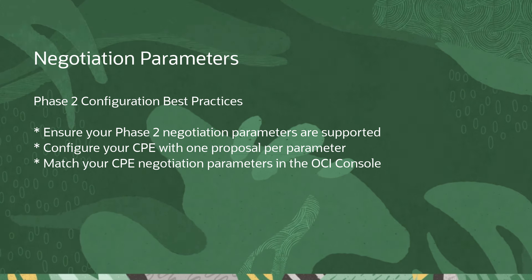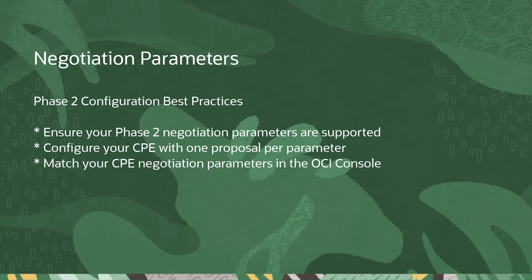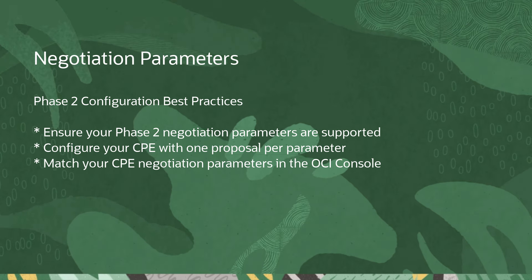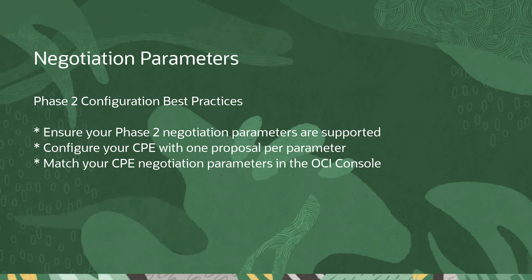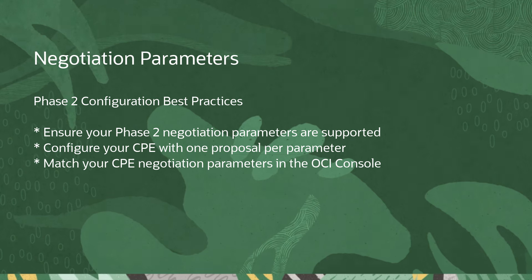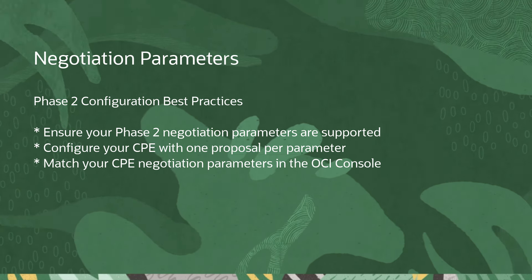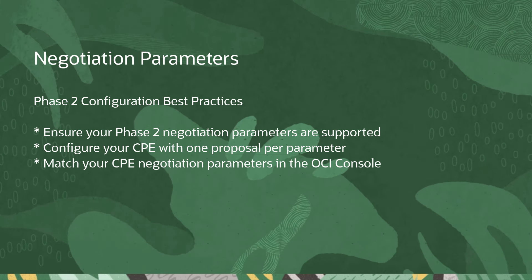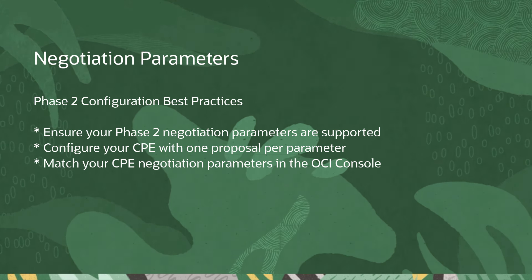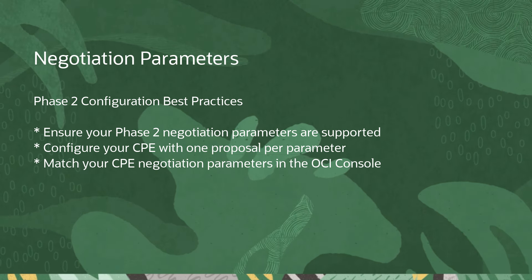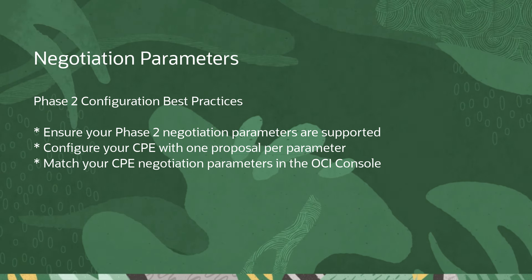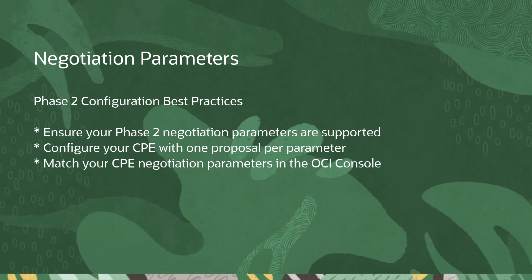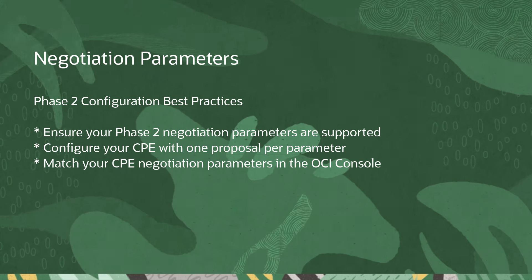OCI VPN Phase 2 issues may also stem from negotiation parameter configuration. To prevent such a problem, review the Phase 2 section of our Supported IPsec Parameters page. Compare the parameters in this document with your CPE side tunnel config and confirm your CPE only employs values found on this page. For best results, ensure your CPE's encryption algorithm, authentication algorithm, and Diffie-Hellman Group each pass one and only one proposal. Likewise, ensure your CPE's Phase 2 lifetime is set to 3,600 seconds.